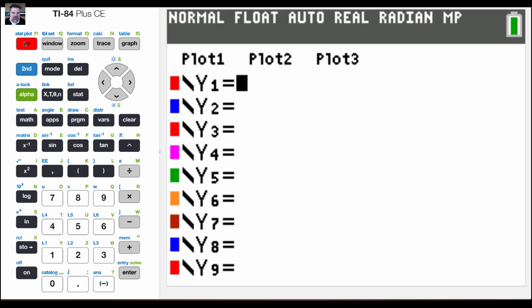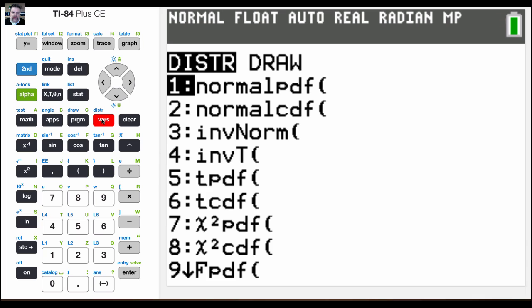So the first step is to go to y equals and then we're going to click on second and then vars which pulls up the distributions. You could do a t distribution, chi-squared, all the distributions really, but we just want to do a normal distribution. So we're going to say normal PDF.